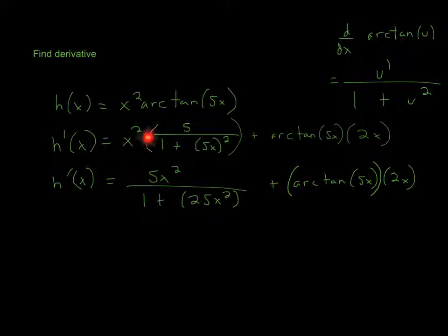Now simplifying it, x squared multiplied across will be 5x squared over 1 plus - all I did here was square everything inside the parentheses - 25x squared, plus arctangent of 5x times 2x. This will be our final answer.